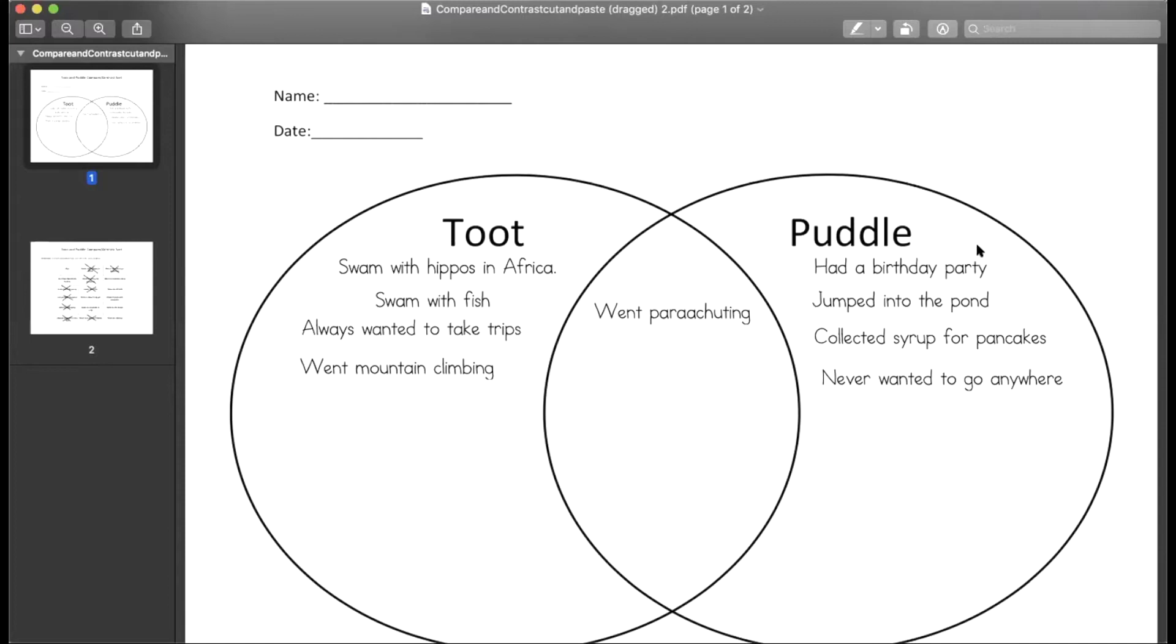All right, now let's look at Puddle's circle. He had a birthday party. Toot didn't have a birthday party, only Puddle. He jumped into the pond. Toot didn't jump into the pond, only Puddle did, so it would only go on Puddle's side. Collected syrup for pancakes and never wanted to go anywhere. He just wanted to stay home, remember? But he did miss his friend, right?